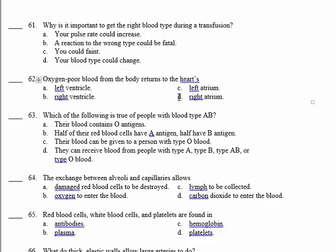Number 63: which of the following is true of people with blood type AB? Blood type AB are universal recipients, which means they can receive blood from any other blood type — types A, B, AB, and O. So 63, D.